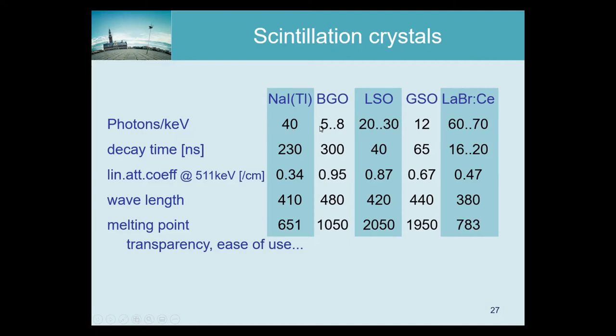More scintillation photons is better because the number of scintillation photons is a random number, and the direction they travel is also random — so more of them suppresses statistical fluctuations and gives better energy resolution and position accuracy. The decay time is the time photons spend at the higher energy level before returning to the low energy level — effectively the duration of the scintillation — and we want that to be as fast as possible.